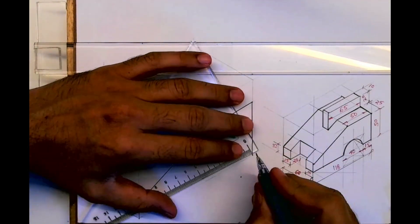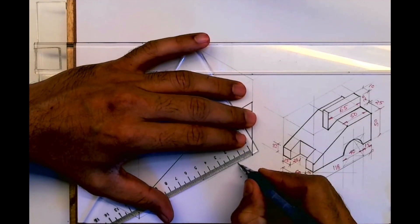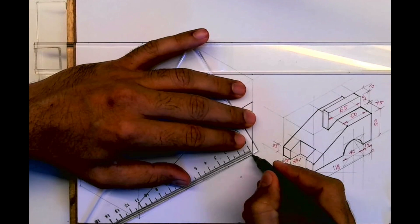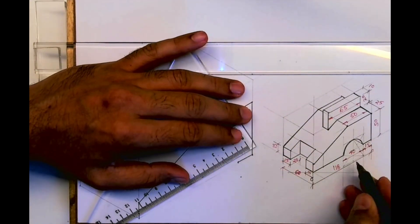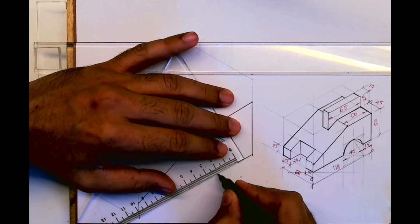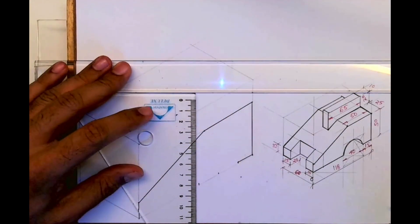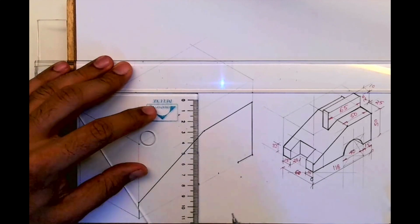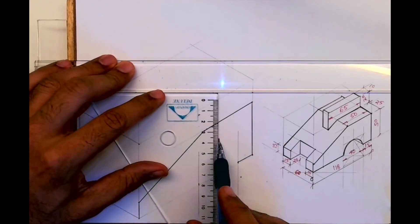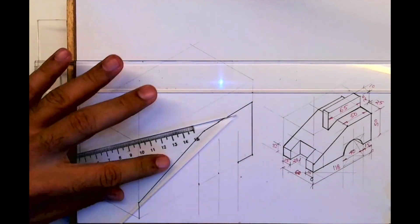Now this is 15, 40. So you take 15 from here, then you take 40. Mark the midpoint and you can draw a vertical line from here. We'll draw the circle later on, I'm just drawing lines over here.